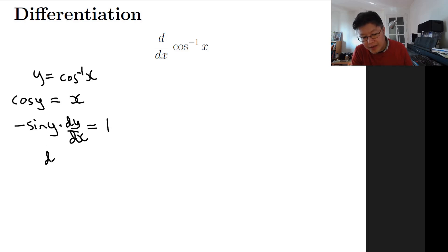So we get dy/dx equals minus 1 over sine y. So this is actually the derivative - that's dy/dx, it's minus 1 over sine y. The only problem is...